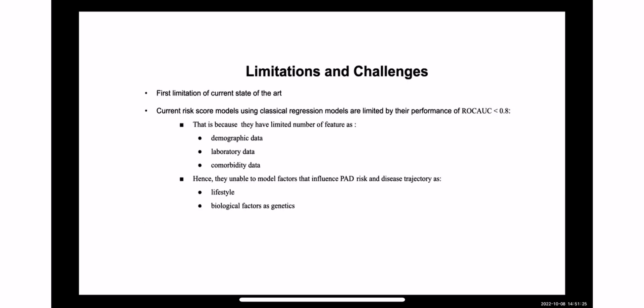The limitations of current models and algorithms are that they use classic risk factors with regression models, which limits their feature modeling to demographic data, laboratory data, and comorbidity data — for example, what diseases can co-occur in a patient with this condition. These current models don't take into consideration the disease trajectory, and lifestyle and biological factors such as genetics were not modeled.